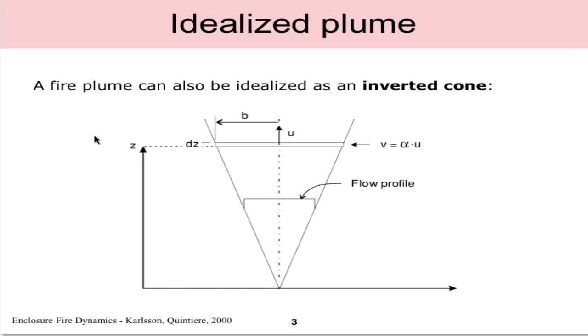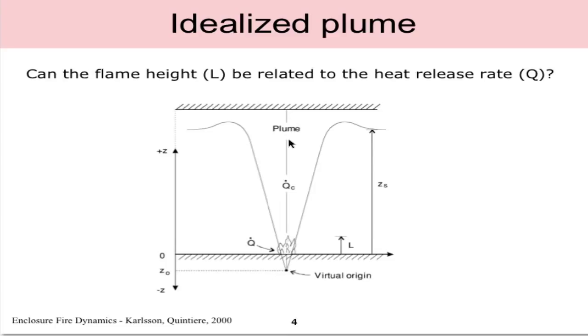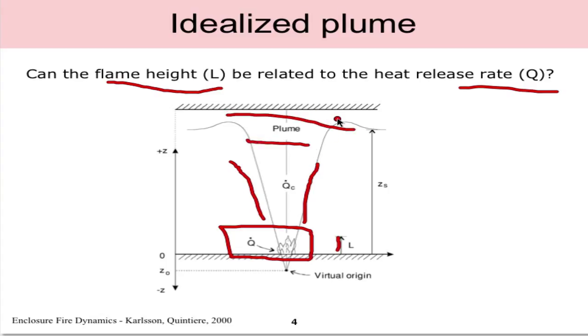With that we ask the question if the flame height, the physical flame height which is denoted as L, can we relate that to the heat release rate Q or other independent parameters. Shown here in this diagram is some fire at the floor level with some physical flame height L and we see that inverted cone profile going upwards to the ceiling and we see this entire region up here defined as the plume region.